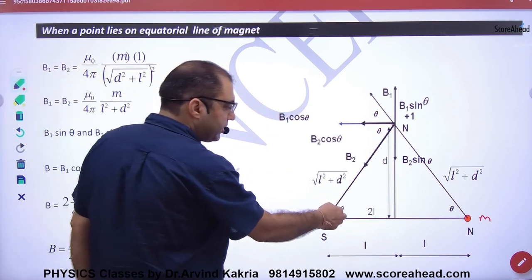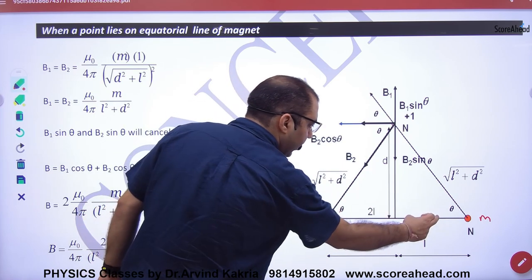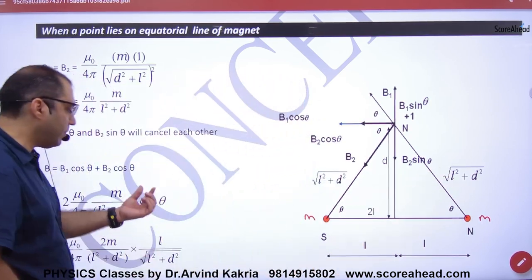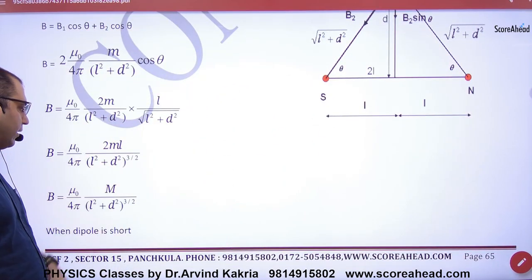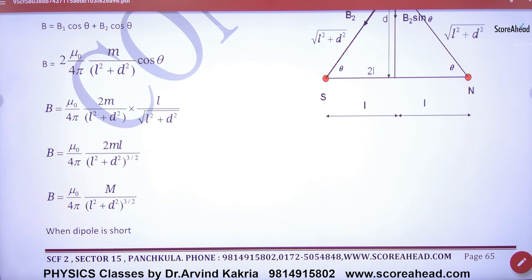Now, what will cos theta be in this triangle? L upon under root of L square plus d square. If you multiply them, raise to power 3 by 2. M into 2L becomes capital M. This is the B value.